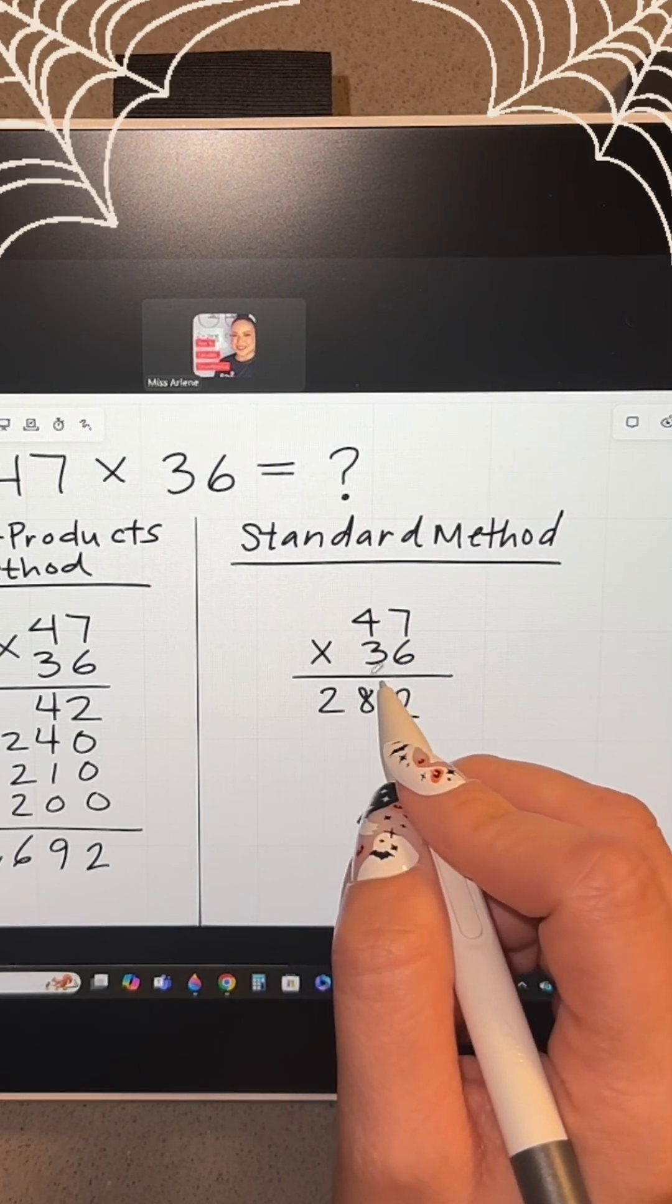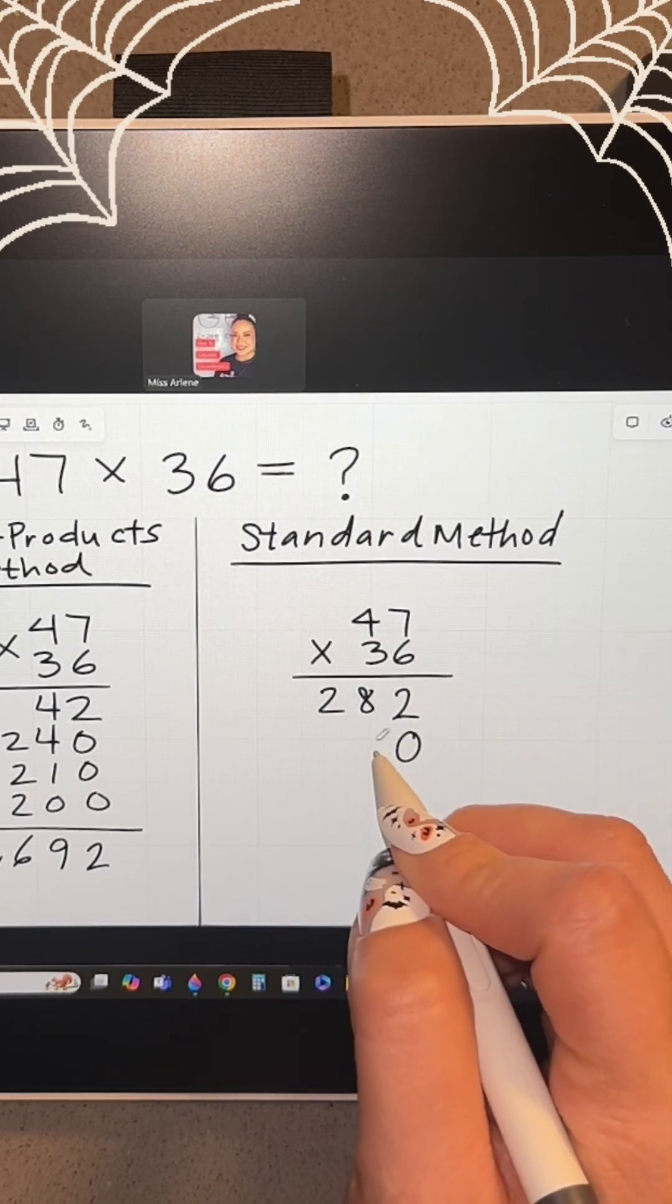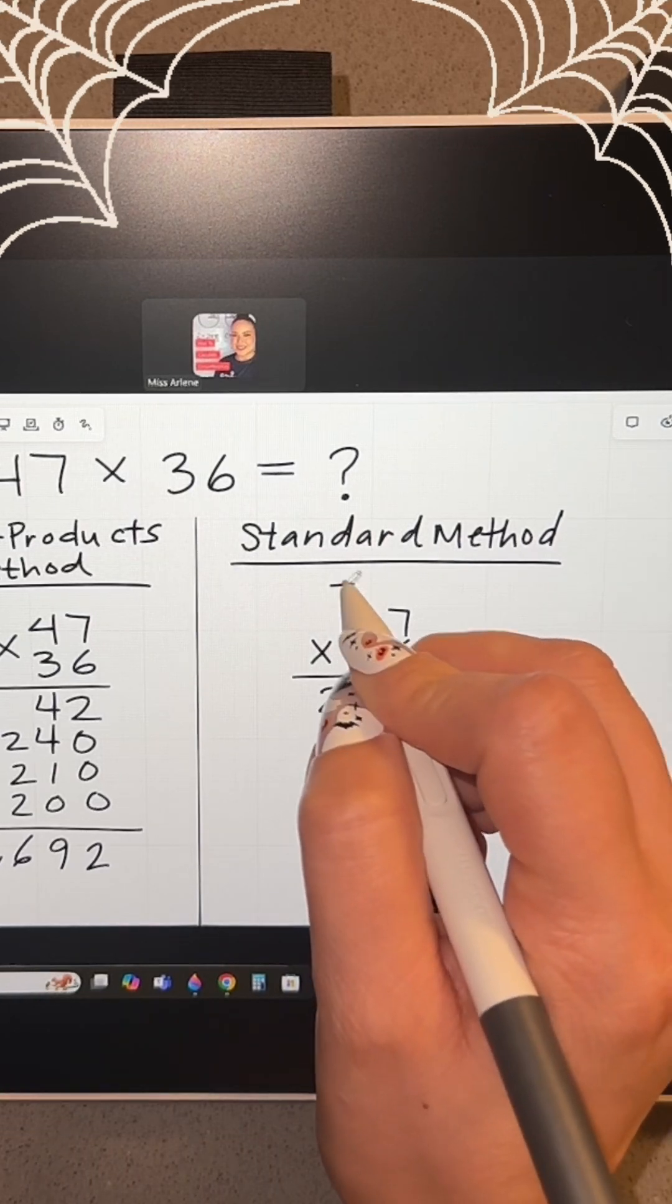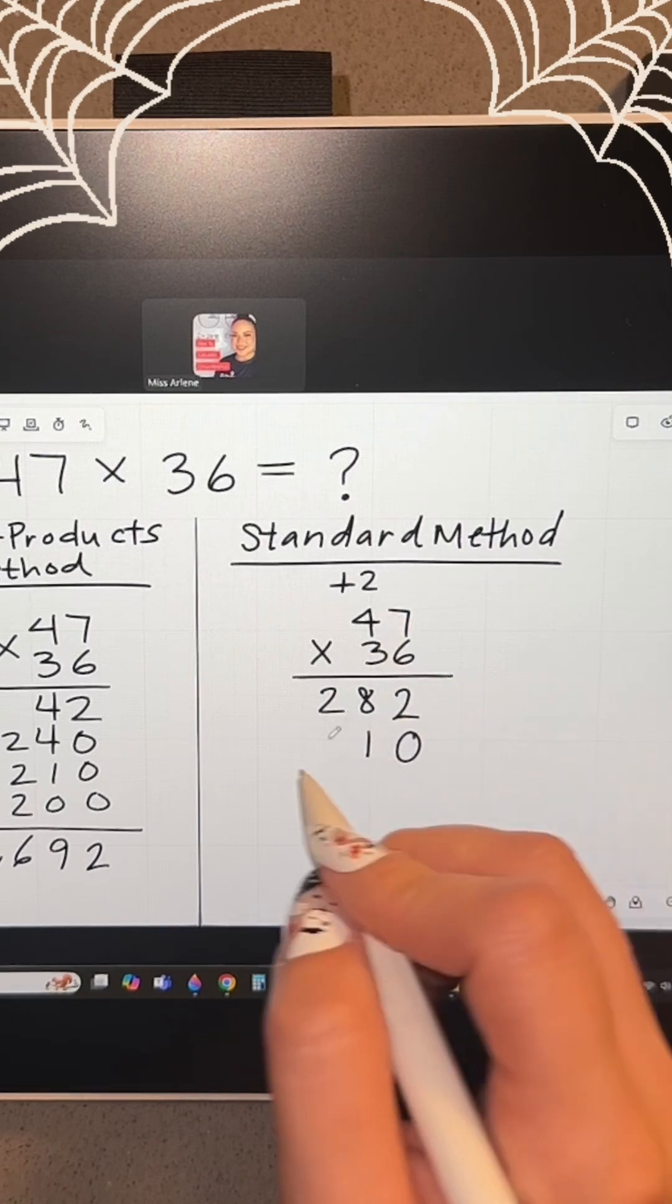Since now we're going to distribute the 3 which is in the 10s place, we have to add a placeholder so that our answer will begin in the 10s place. 3 times 7 is 21. Carry the 2. Leave the 1. And 3 times 4 is 12 plus 2 more is 14.